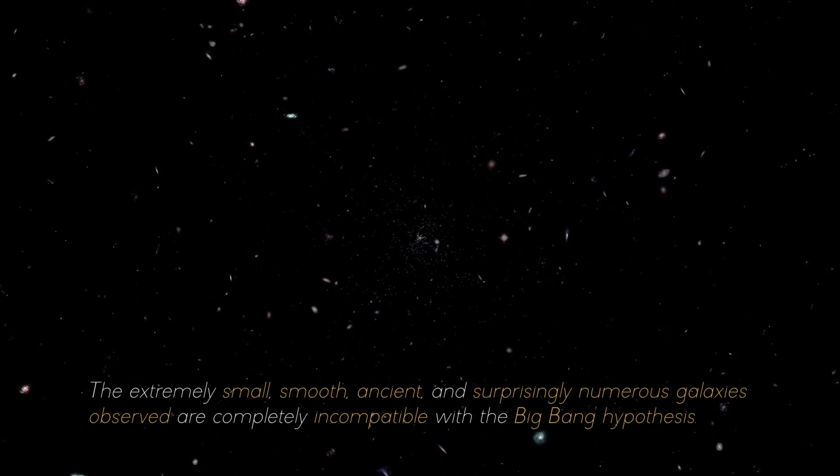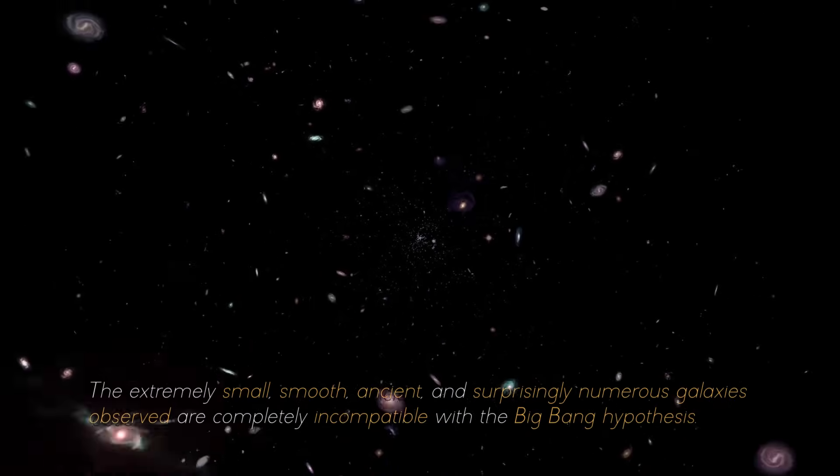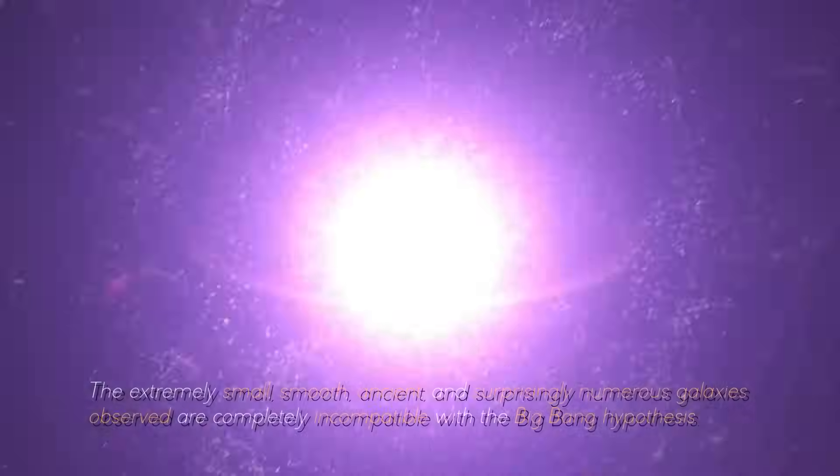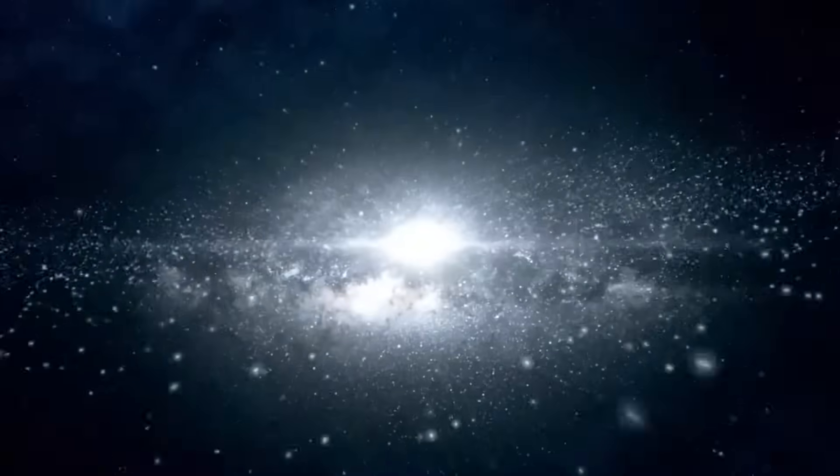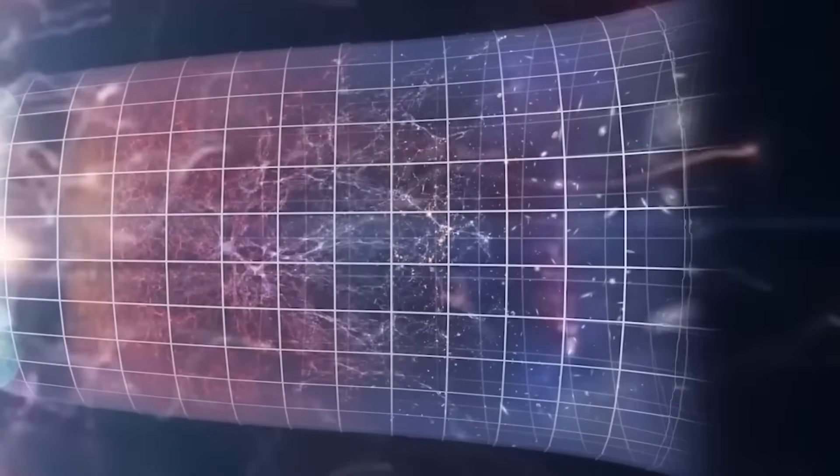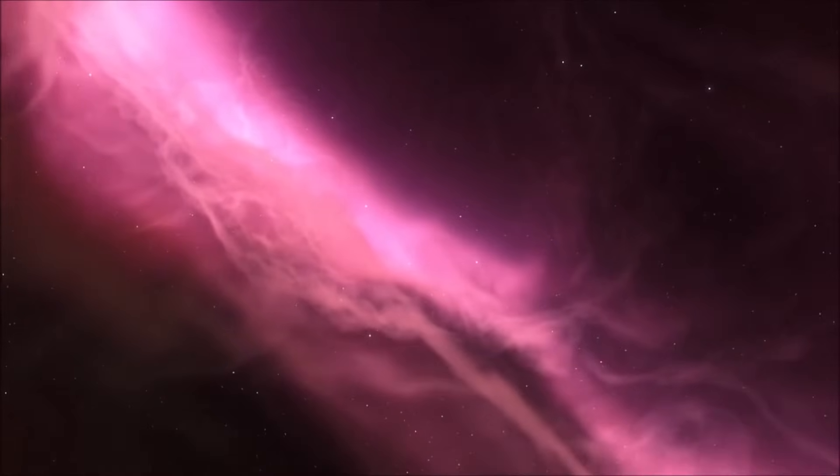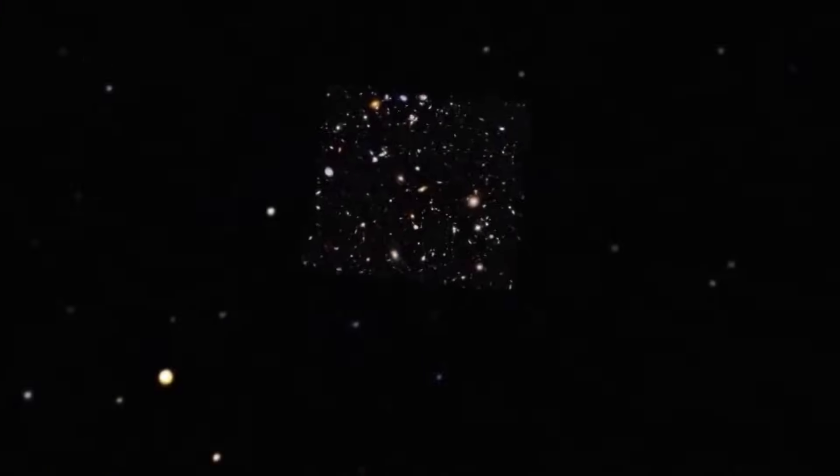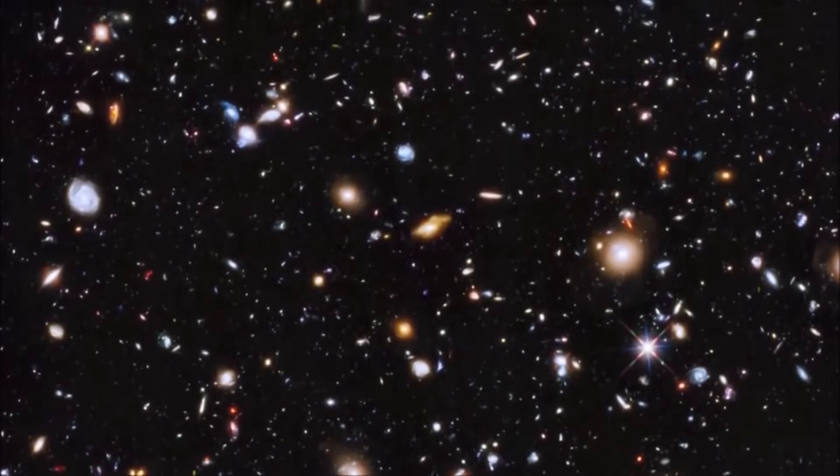The extremely small, smooth, ancient, and surprisingly numerous galaxies observed are completely incompatible with the Big Bang hypothesis. In the view of some scientists, the Big Bang proposes that the universe is expanding and that galaxies and other objects in expanding space should appear larger with increasing distance. However, images from the James Webb Telescope show us more and more smaller galaxies, even those with a luminosity and mass much greater than that of the Milky Way.